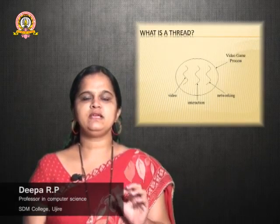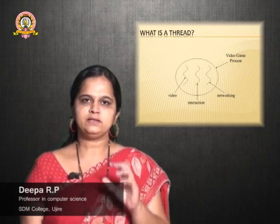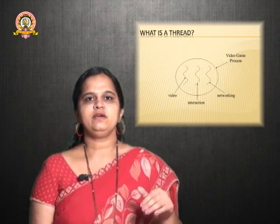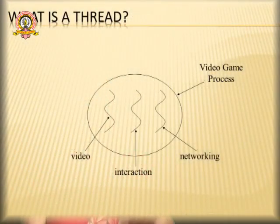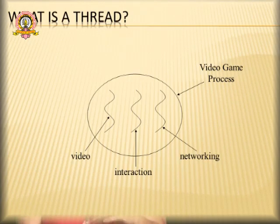Hello students. Today we are going to discuss about threads in Java. A thread is actually a single flow of control in a program. A program with only one single main method is also called a thread. What we are going to discuss here is the multithreading concept. Before going to multithreading, we need to know about what is a thread. A thread is an individual execution of a program.